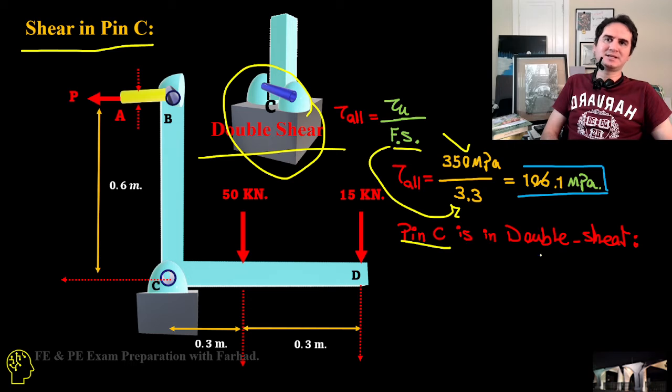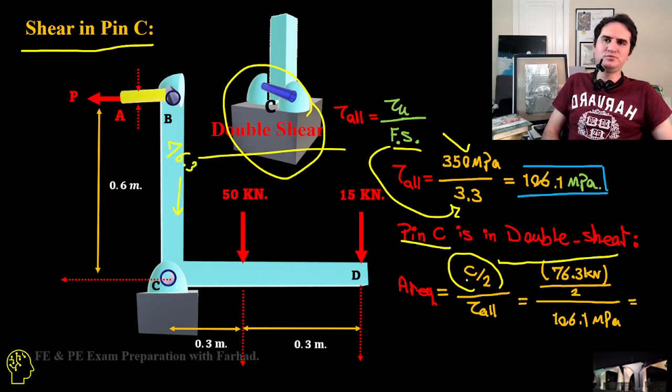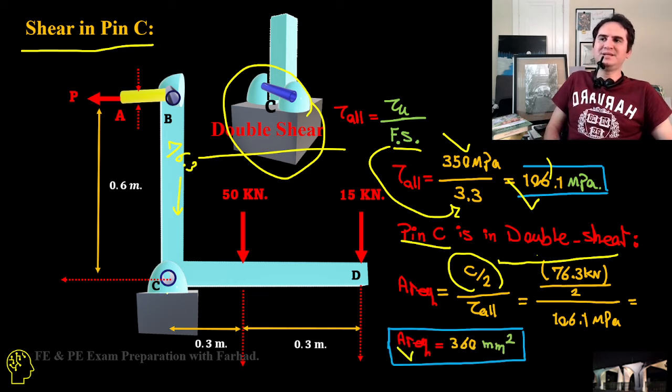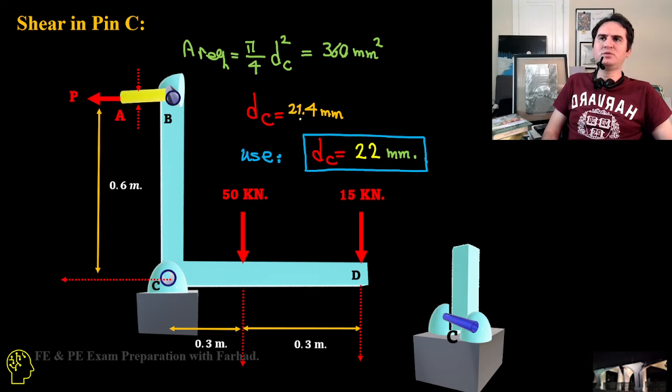Pin C is clearly under double shear. Required area based on double shear is C over 2, the force applied which we calculated is 76.3, over 2 because of double shear, over the acceptable shear which we just calculated to be 106.1 MPa. This gives required area for pin C is 360 mm squared. If area is 360 and that's a quarter of pi times D_C squared, this gives us a minimum value of 21.4. We use a diameter of pin 22 millimeters.